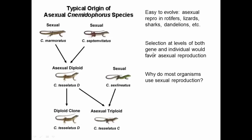It's not that this can never happen — it actually turns out that this is fairly easy to evolve. We see asexual reproduction in rotifers, lizards, sharks, dandelions, and a number of other organisms. Here's an example: two species of lizard that can hybridize to make a diploid lizard that can lay eggs developing into perfectly good adults. They can also hybridize with another species to make triploid individuals that can clone themselves.